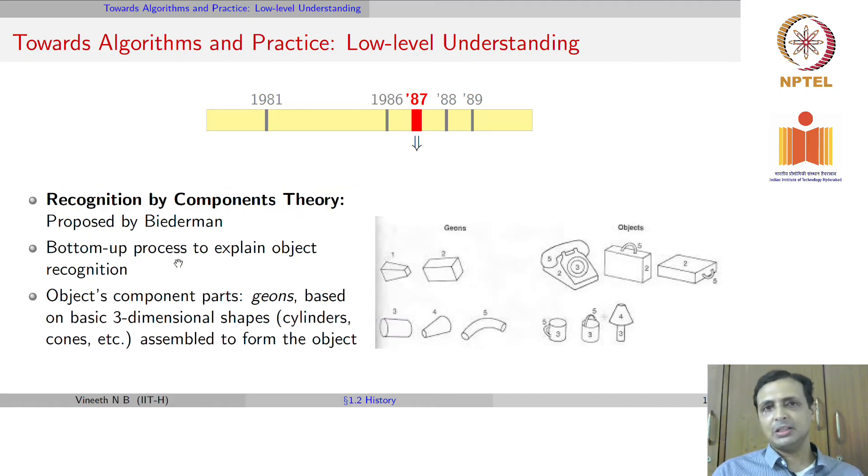In 1987, there was also the recognition by components theory proposed by Biederman, which was a bottom-up process to explain object recognition where the object was constituted in terms of parts which were labeled as geons. Geons simply meant basic three-dimensional shapes such as cylinders, cones, as you can see in some of these images here, which were assembled to form an object. This was a theory of visual recognition to see if we could recognize objects in terms of their parts.